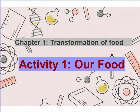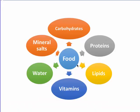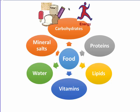Starting with chapter one, activity one. First of all, food is classified into six groups: carbohydrates, proteins, lipids, vitamins, water, and mineral sources. Carbohydrates can be found in several foods such as wheat, bread, rice, flour, sugars, chocolate, etc. They are a good and fast source of energy.